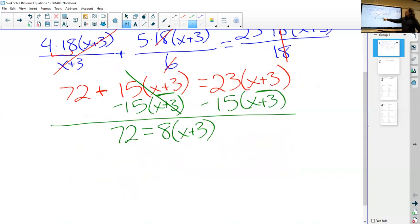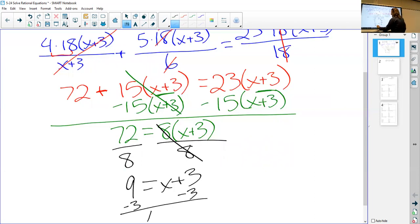So a couple ways you could go about doing this. You could distribute the 15 and the 23, but hopefully you recognize since these are the same amounts that we have 15(x+3)s on the left, 23(x+3)s on the right, we can actually combine these two together. So if I move this to the right-hand side, I can say if I take away 15(x+3)s from both sides, we have 72. This all cancels out, equals 23 minus 15 is 8(x+3). And then you can say, well, 72 is divisible by 8. What if I just divide both sides by 8? So 72 divided by 8 is 9. These 8s cancel out. We have x plus 3. And now this is not so bad. So minus 3 to both sides. And we get x equals 6.